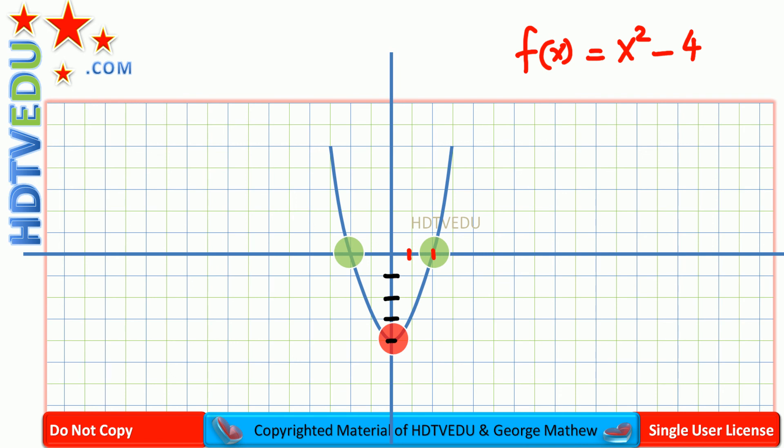The graph is symmetric about the vertex. It has two x-intercepts and one y-intercept. Red is the y-intercept. The green dots are the x-intercepts. And vertex h equals 0, k equals negative 4. So 0, negative 4.